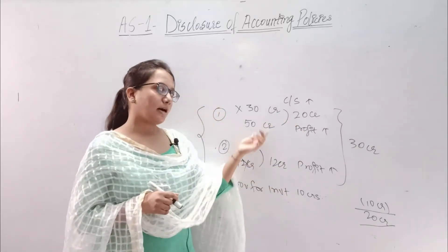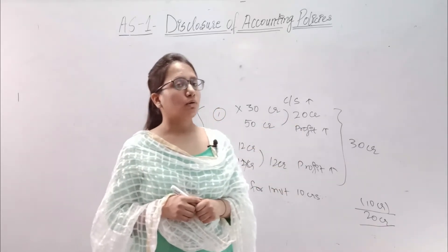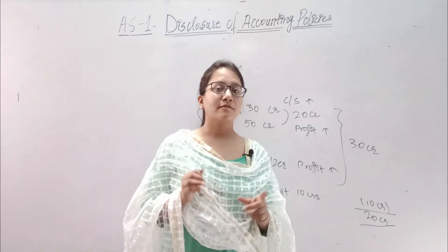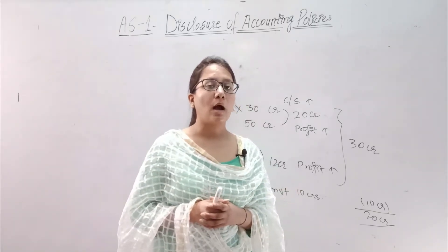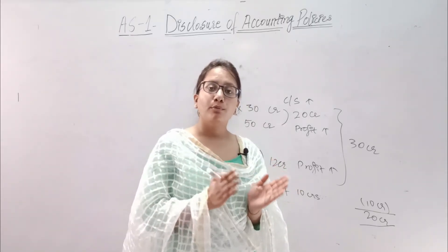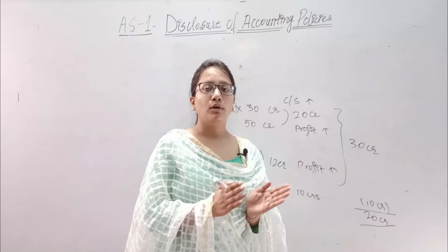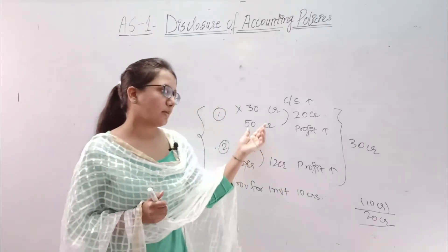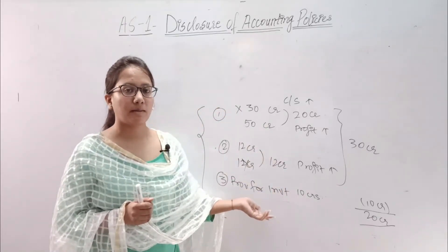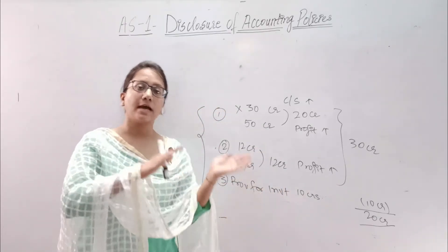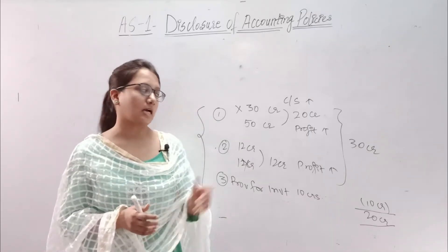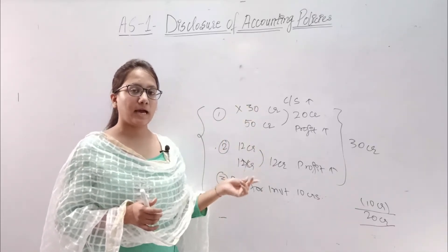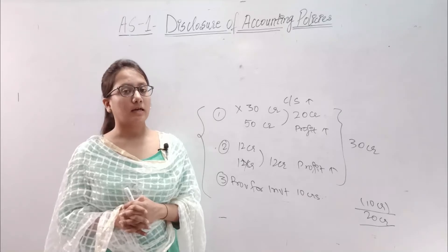In some cases we can't calculate the impact properly, so if it is not ascertainable, there is no problem — we will just mention it. But if we can calculate the amount, wholly or in part, then we have to mention how much impact will happen.